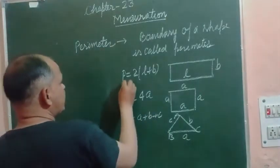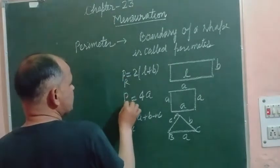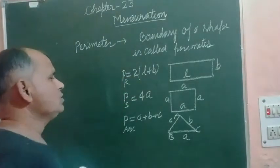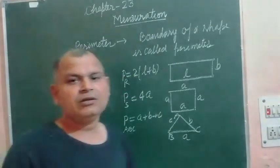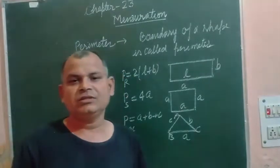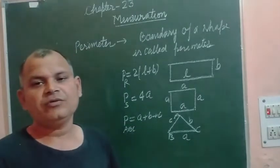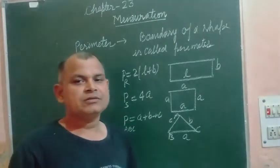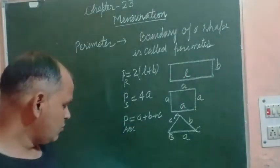And that is the perimeter of a rectangle, and this is the perimeter of a square. So these are the formulas of a few figures for perimeter.